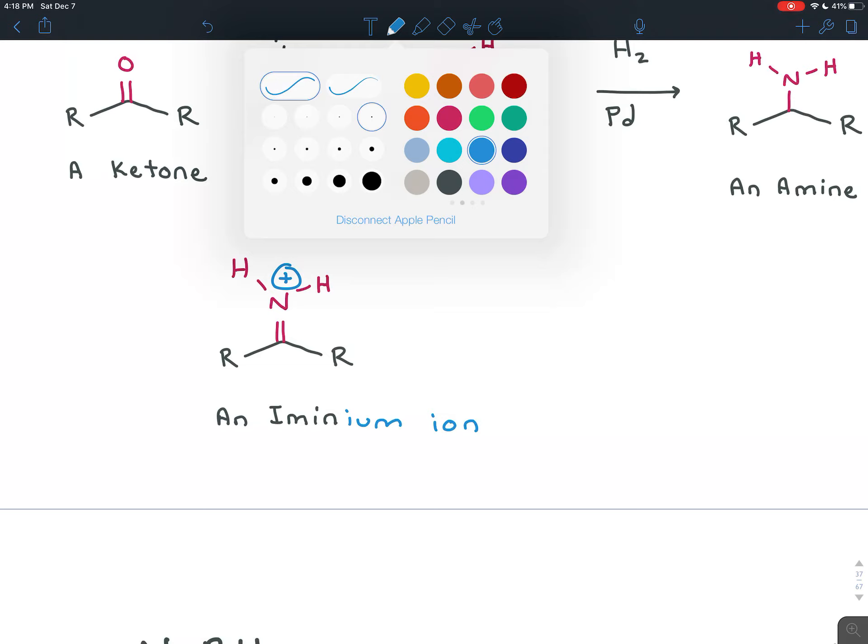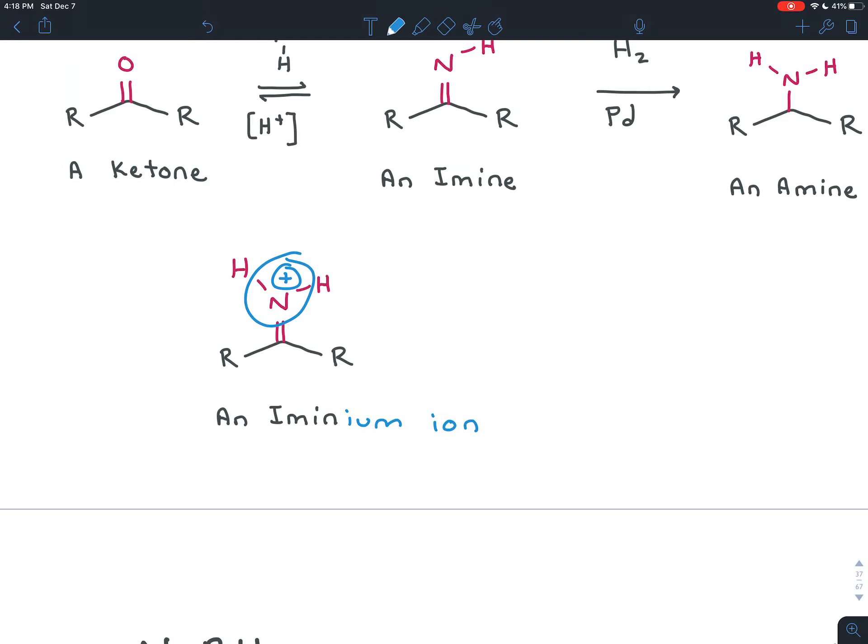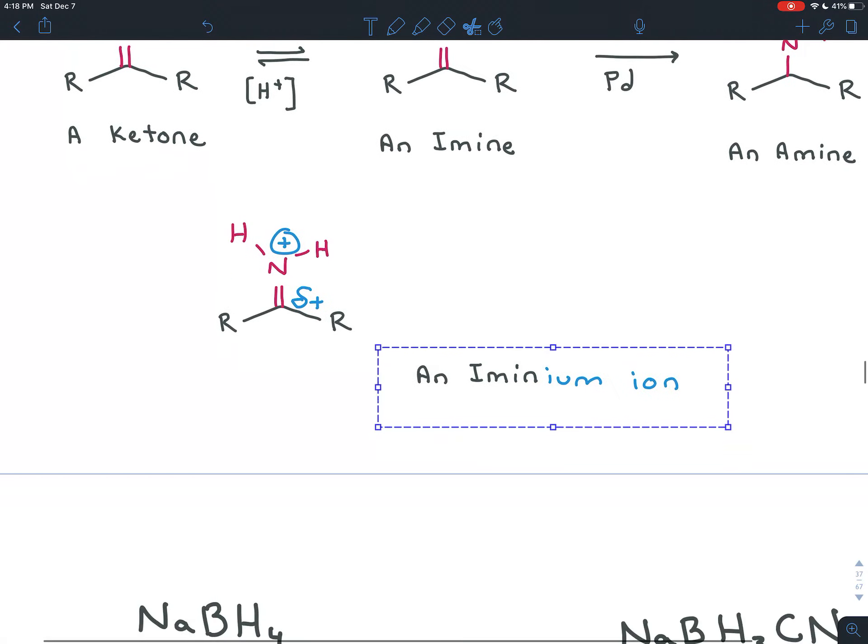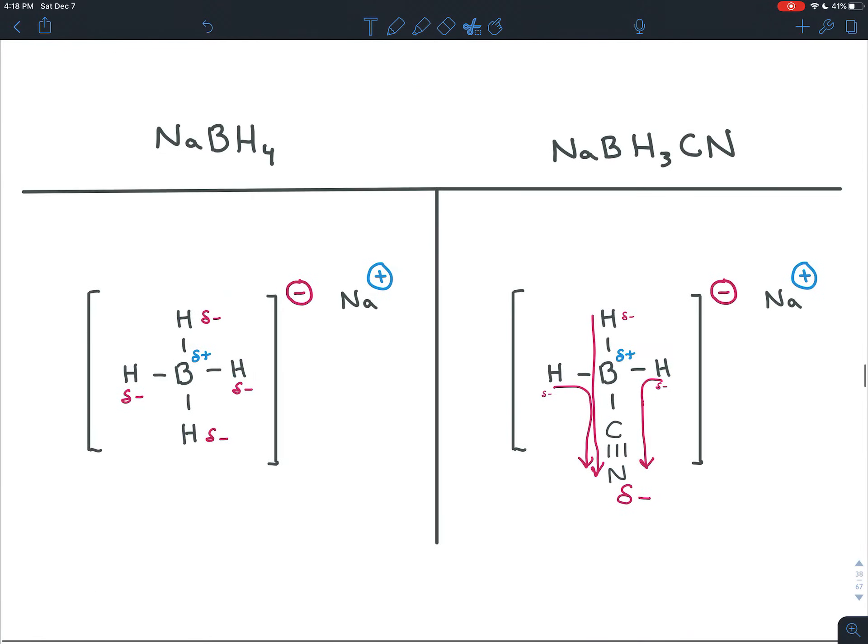This nitrogen is very electronegative. It's bonded twice to this carbon. And it's pulling electron density away from the carbon, not just through its electronegativity, but also through this positive charge, which is really attracting electrons. So this carbon becomes really slightly positive. And even a weak nucleophile will attack it. Even a weak nucleophile, like the hydrogens on sodium cyanoborohydride.